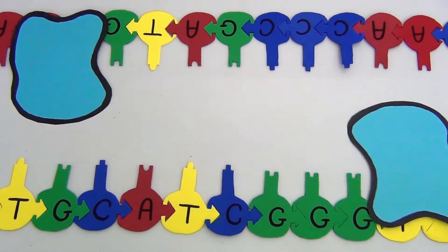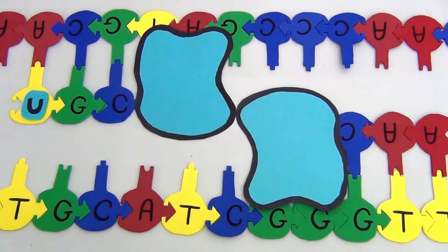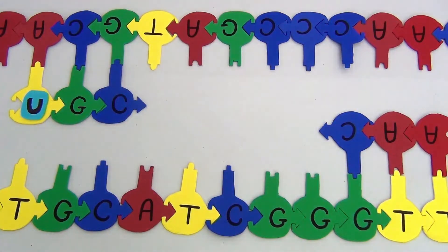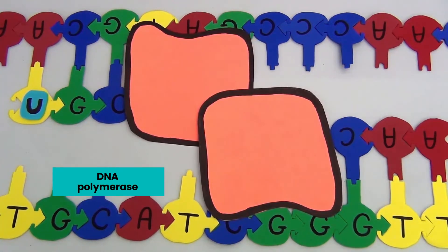From here, primers can be added by the protein primase. Primers are short RNA sequences that act like a starting line for where DNA can be made. DNA polymerase, an enzyme that makes DNA, can then bind to the primer and start reading the original DNA strands to determine what new complementary bases need to be added.